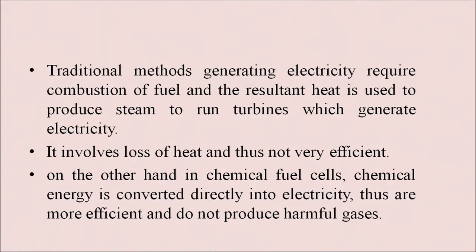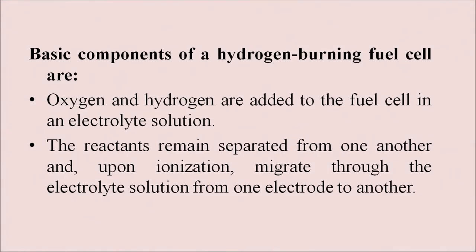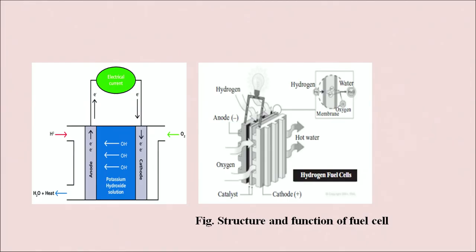Traditional methods of generating electricity require combustion of fuel and the resultant heat is used to produce steam to run turbines. This involves loss of heat and is not very efficient. In chemical fuel cells, by contrast, chemical energy is converted directly into electricity, making them more efficient and not producing harmful gases. Hydrogen and oxygen are added to the fuel cell in the electrolyte solution; the reactants remain separated and upon ionization migrate through the electrolyte from one electrode to another, with the flow of electrons diverted into an electrical motor supplying current.